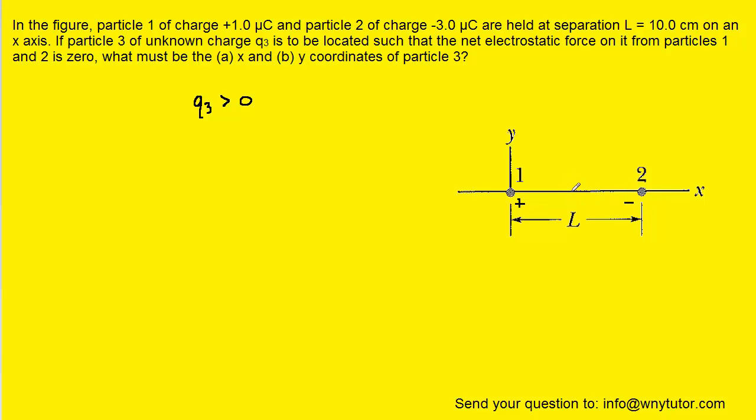Now if we try to place charge 3 between these two charges, for example, we would run into a bit of a problem because charge 3 is positive. So if we placed a positive charge there, then that charge would be repelled by charge 1 and therefore the force would be pushing charge 3 to the right.